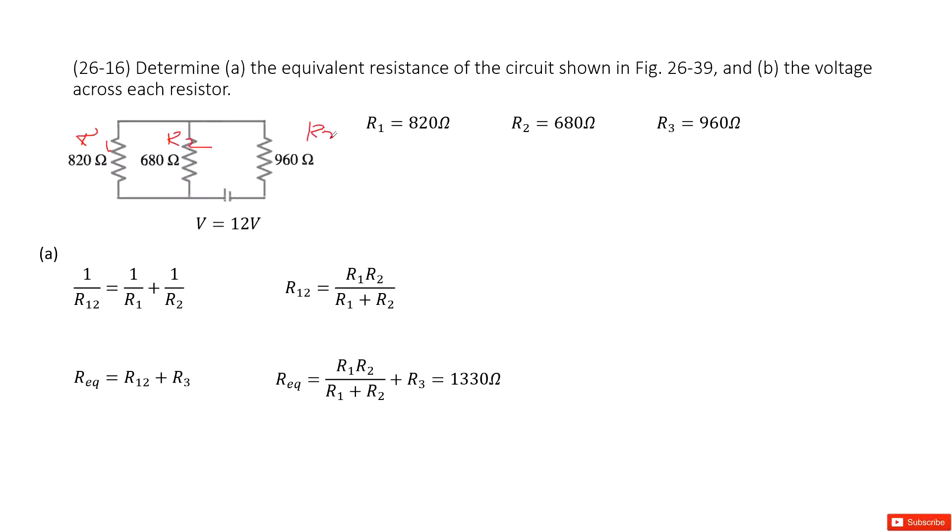So it looks like R1 and R2 do the parallel connection, becomes R12. And then R12 does the series connection with R3 to get the final equivalent resistance.